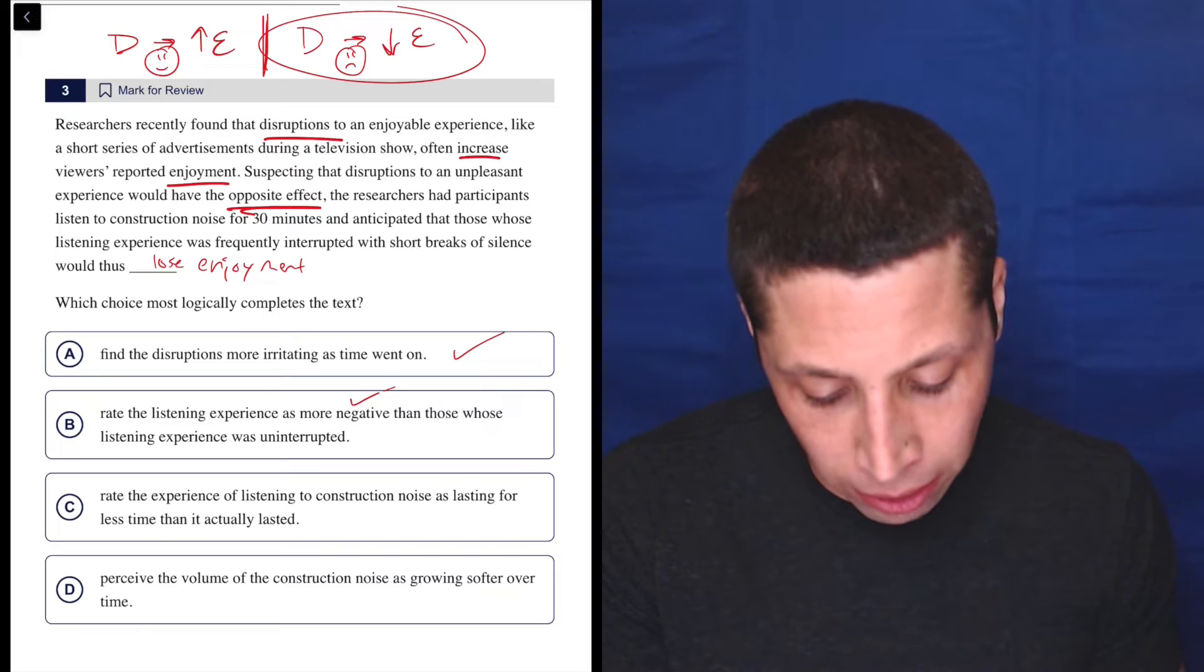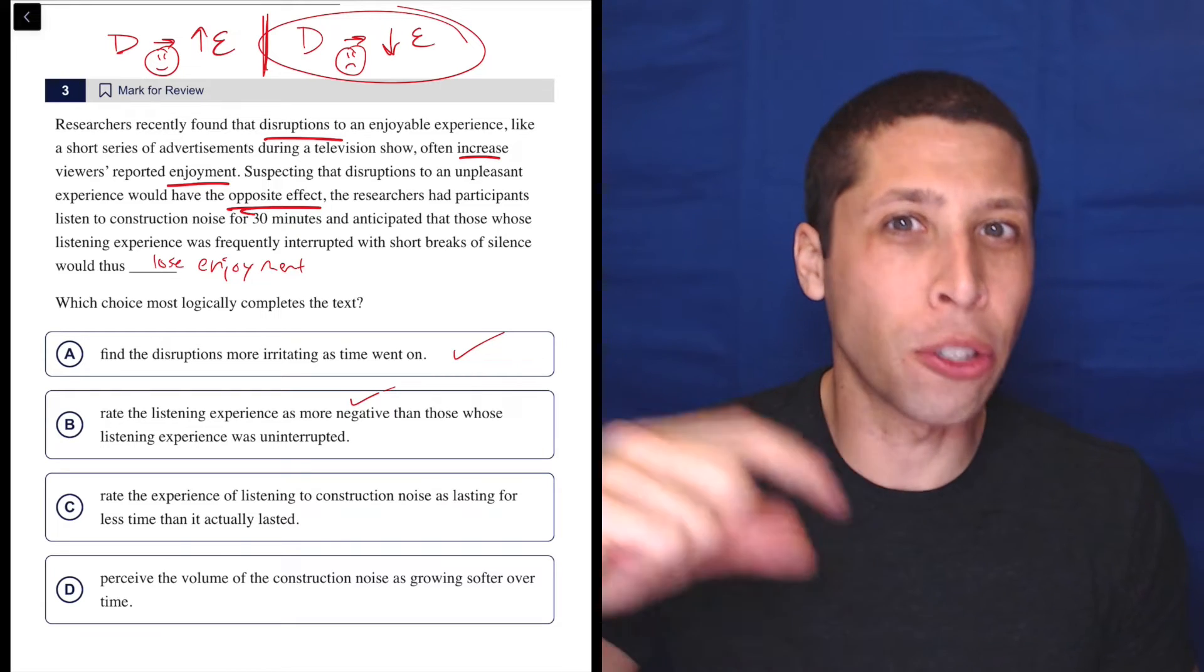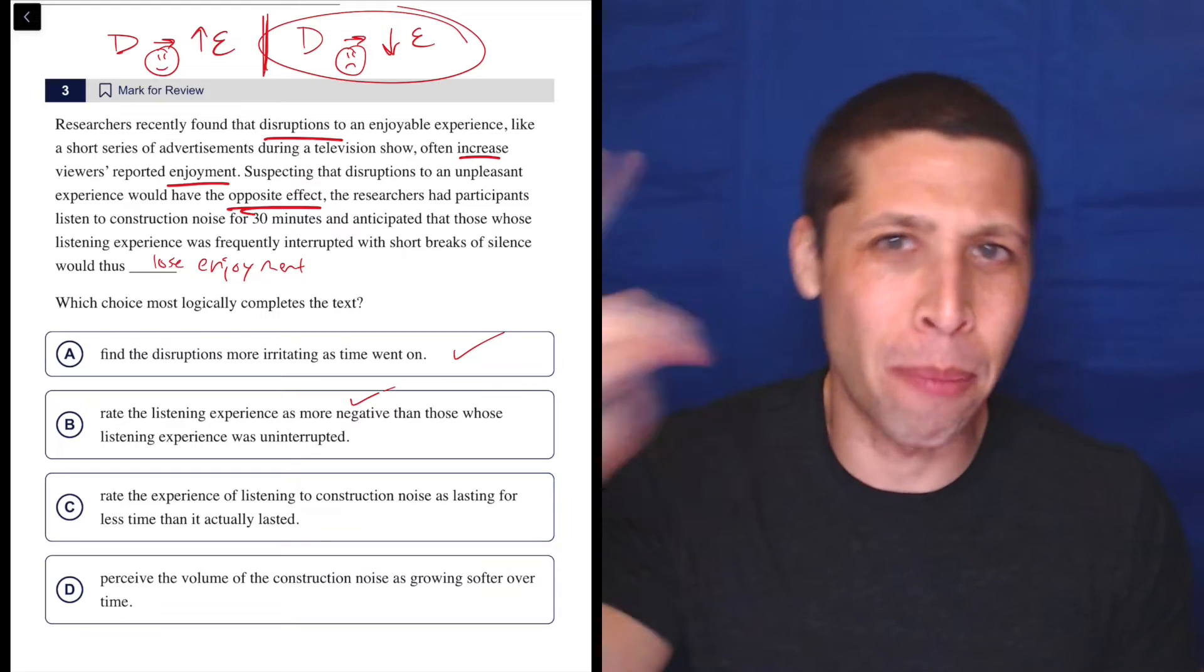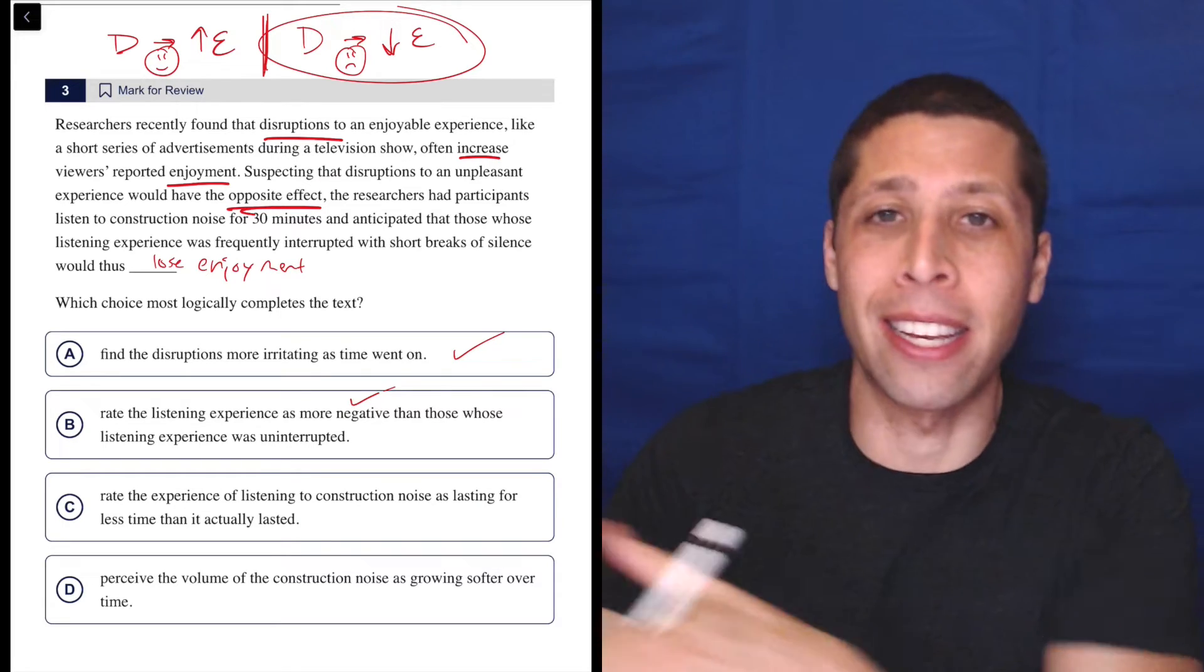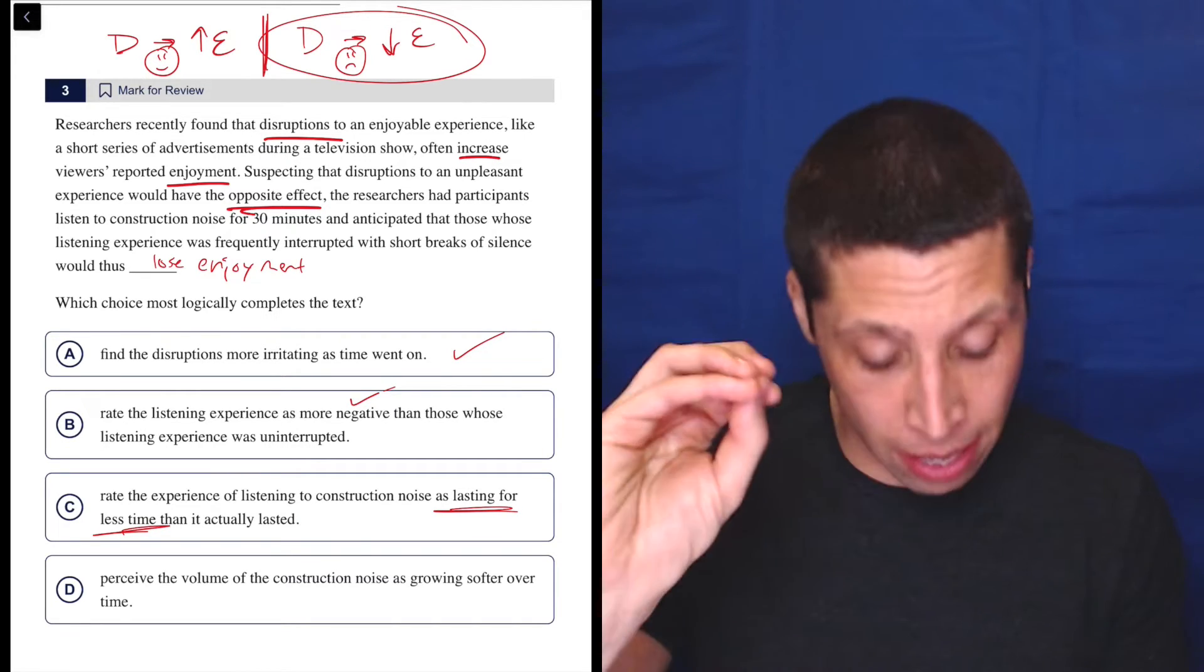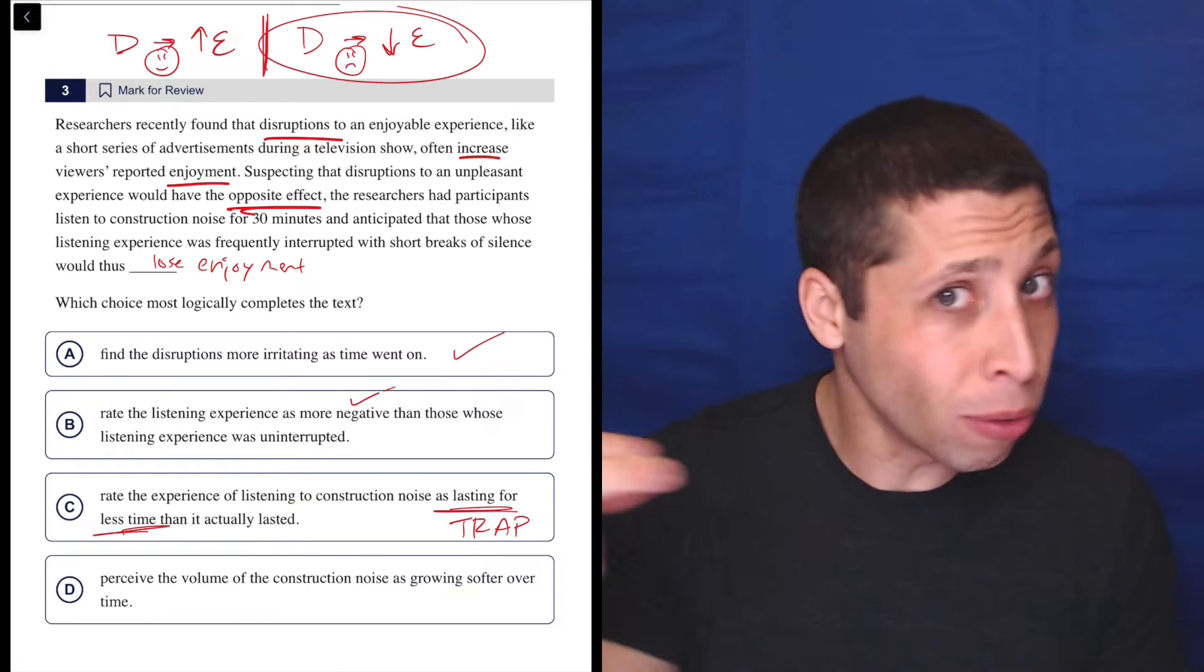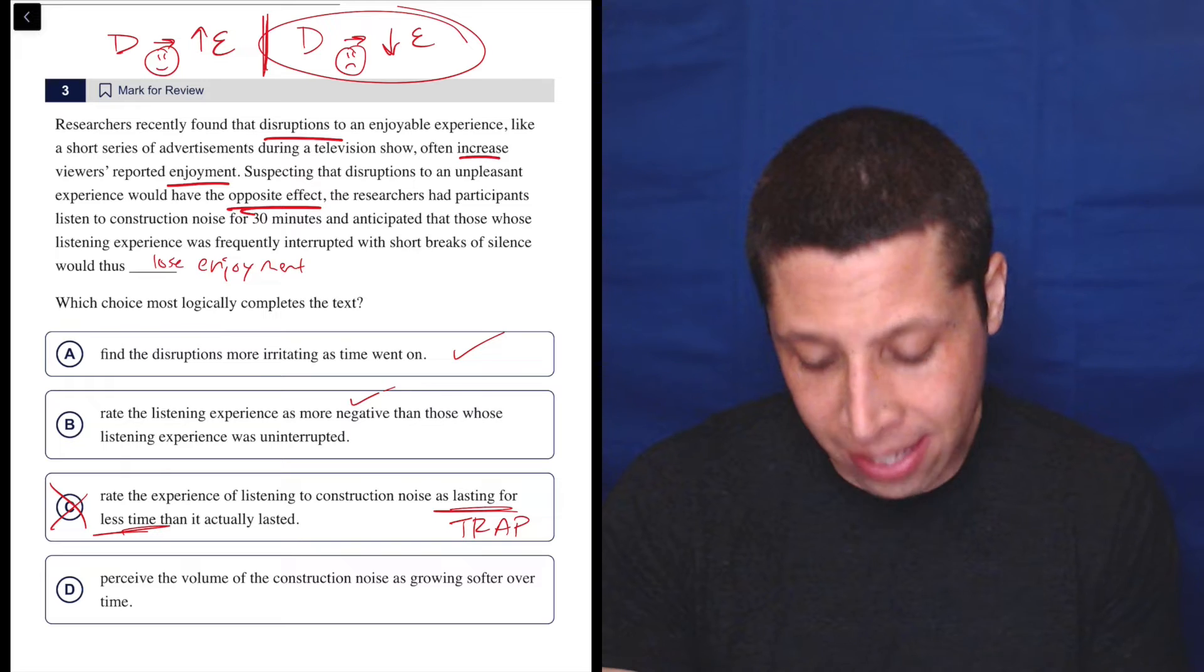Rate the experience of listening to construction noise as lasting for less time than it actually lasted. Well, there might be a version of that choice where you can kind of tell the story, but you shouldn't have to do that. Anytime you start forcing a choice in, that's probably a bad sign for that choice. They never really talked about how long it lasted. And time is a common trap on the SAT passage questions. It's not always wrong, but if they're talking about time in a choice, they better be talking about time in the passage. So I don't really remember that. It's not about how long people perceived or how long it actually went. So C is definitely wrong here.